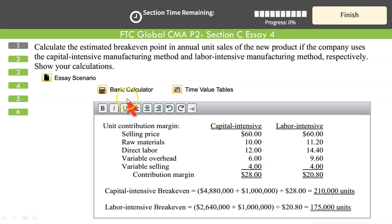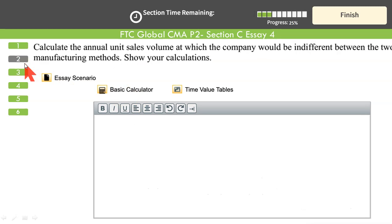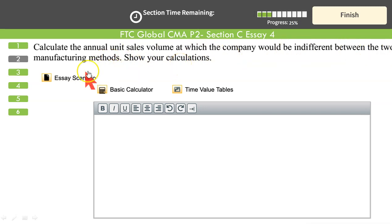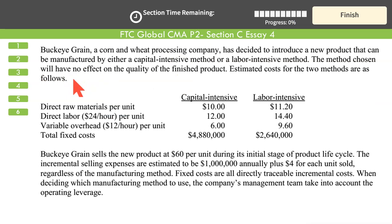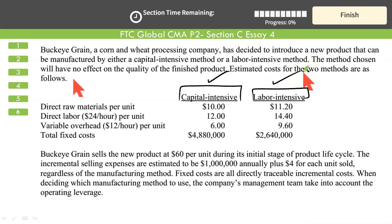First part is done. Second question: calculate the annual unit sales volume at which the company would be indifferent between the two manufacturing methods. We want to find that level of output at which whether we use the capital intensive or the labor intensive method, costs would be equal — we are indifferent.